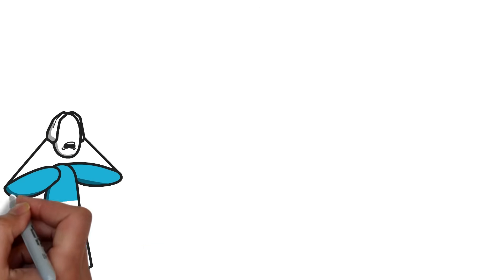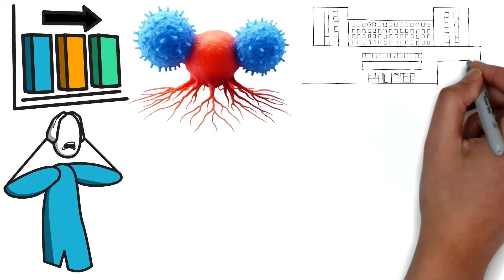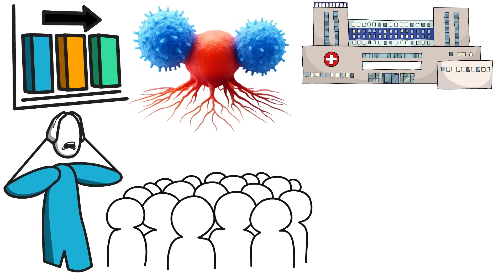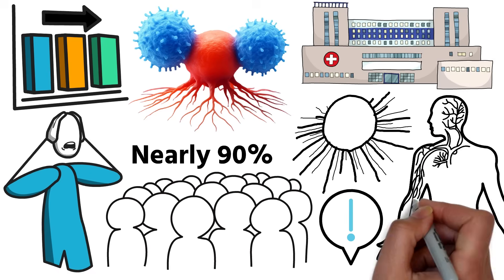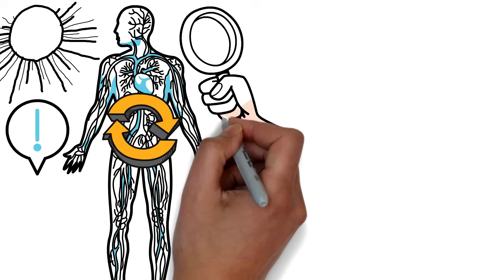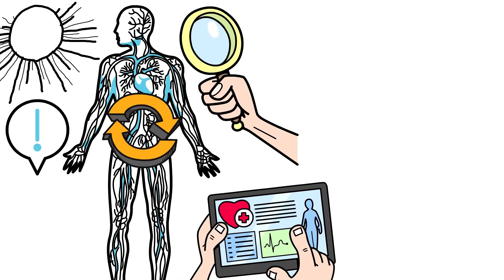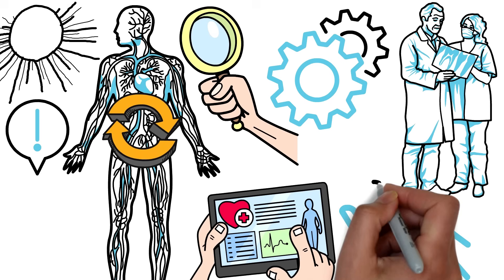But here's the shocking part. The reason this tragedy continues isn't just because of flaws in the medical system, it's also because most people, nearly 90%, don't realize that cancer is actually a metabolic disease, and that changes everything. Because if cancer is metabolic, it means in many cases it can be prevented, and even managed, by addressing the root cause.